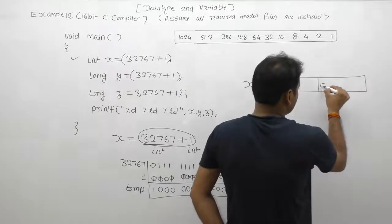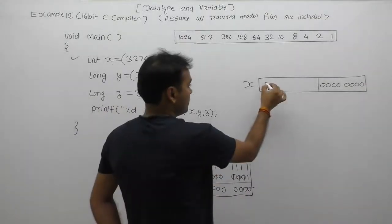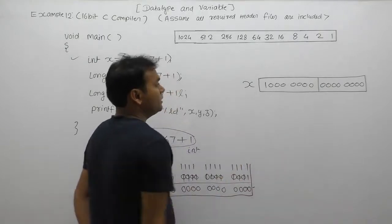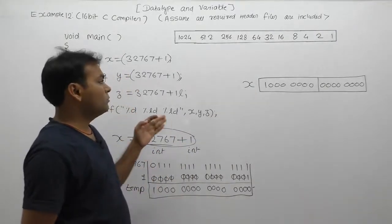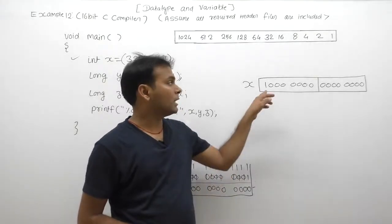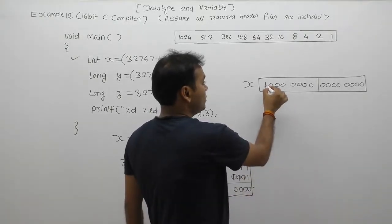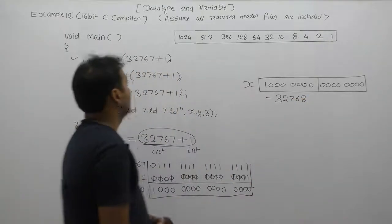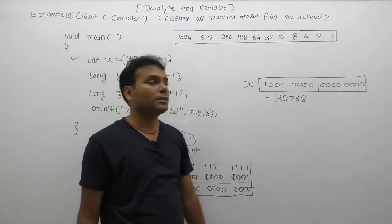From right to left: eight times zero, next one, seven times zero. What is the sign bit of x? The sign bit of x is 1, therefore the number is considered as a negative number. To find the equivalent decimal value of x, we apply two's complement. The result: 2 to the power 15 is equivalent to 32768, meaning the value of x is -32768 plus... which gives -32767 or rather the overflow result.